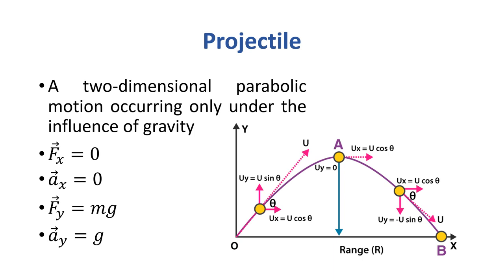Looking at the projectile diagram — a body is given an initial velocity. It moves in a parabolic path: point of launch, point of peak, point of landing. In the x direction, horizontal velocity is u cosθ, and it is the same everywhere. Acceleration is zero because velocity is the same — there is no driving force in the x direction.